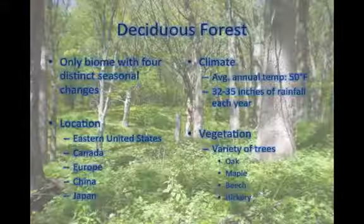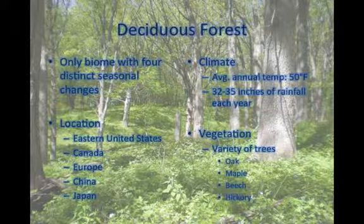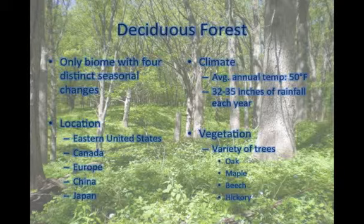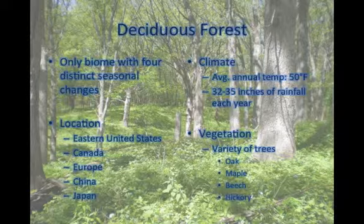The next biome is the deciduous forest biome. The deciduous forest biome is the only biome with four distinct seasonal changes. The deciduous forest is located in the eastern United States, Canada, Europe, China, and Japan. The average annual temperature of the deciduous forest is about 40 degrees Fahrenheit, with 30 to 35 inches of rainfall each year. There are a variety of trees in the deciduous forest, such as the oak, maple, beech, and hickory tree.